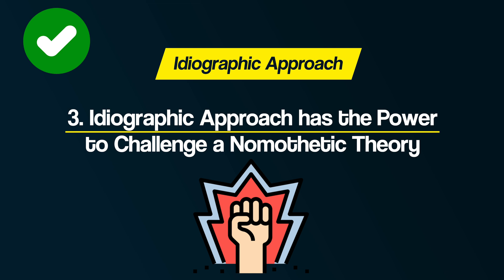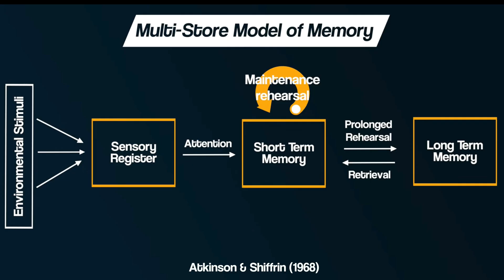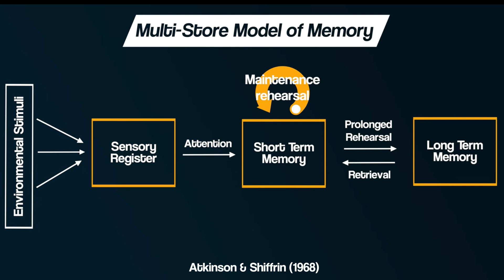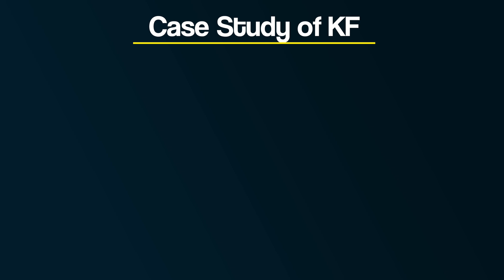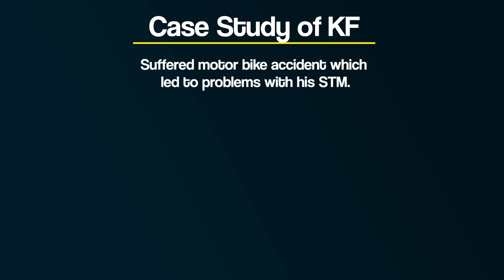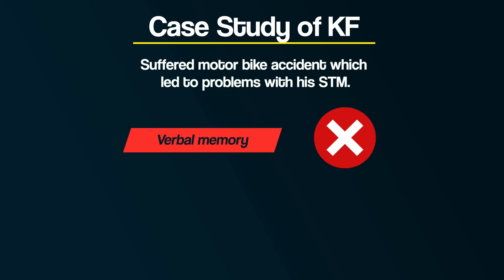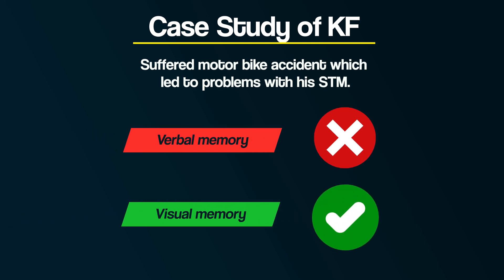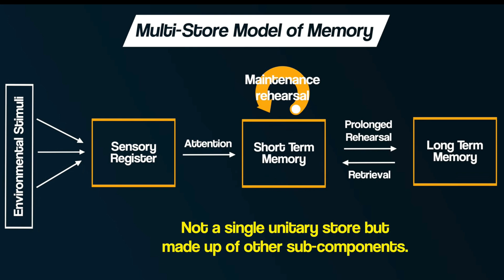Number three: an ideographic approach has the power to challenge a nomothetic theory, because unique cases can serve to challenge general laws of behaviour. The multi-store model proposed a model of memory with three stores — a sensory register, a short-term store, and a long-term store — each stated to be unitary. However, the case study of KF challenged this. KF suffered a motorbike accident which led to problems with his short-term memory — his verbal memory was poor, but his visual short-term memory was fine — demonstrating that the short-term store is not a single unitary store but made up of sub-components for visual and verbal memory. One individual ideographic case challenged a nomothetic theory.